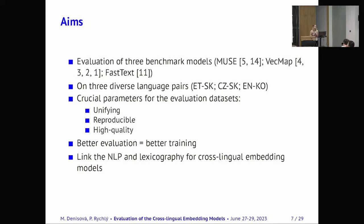So in my project I evaluated three state-of-the-art models. First is MUSE. This model came along with the biggest evaluation and training datasets that are widely used among the authors and other models are VECMAP and FASTX for multilingual alignment. I evaluated them on three language pairs. Distant language pair which is Estonian and Slovak, then close language pair which is Czech and Slovak and then a language pair that do not share script which is English and Korean.